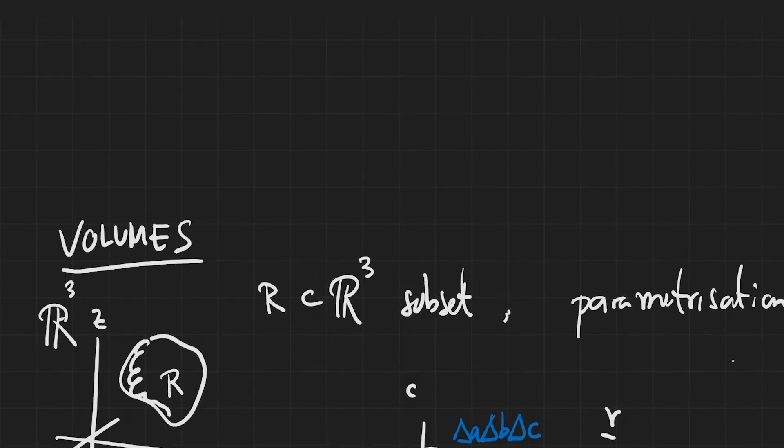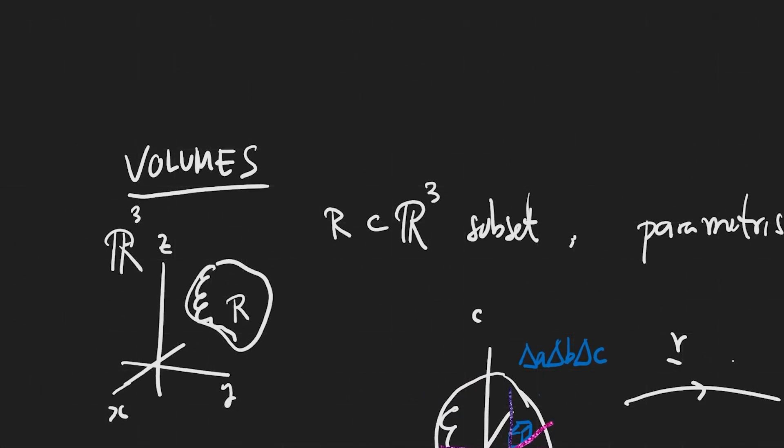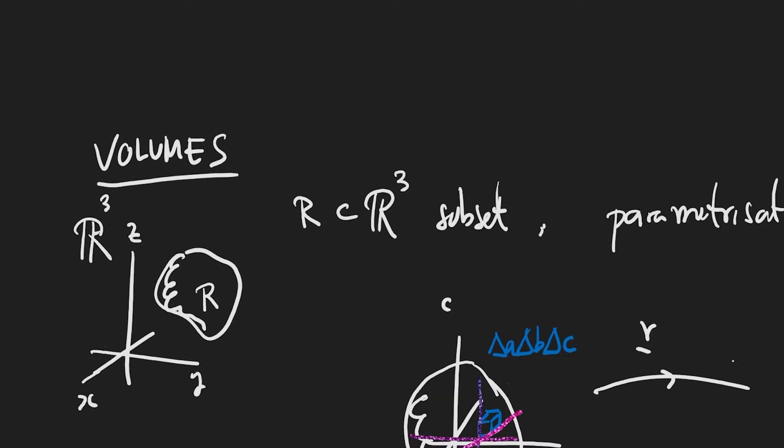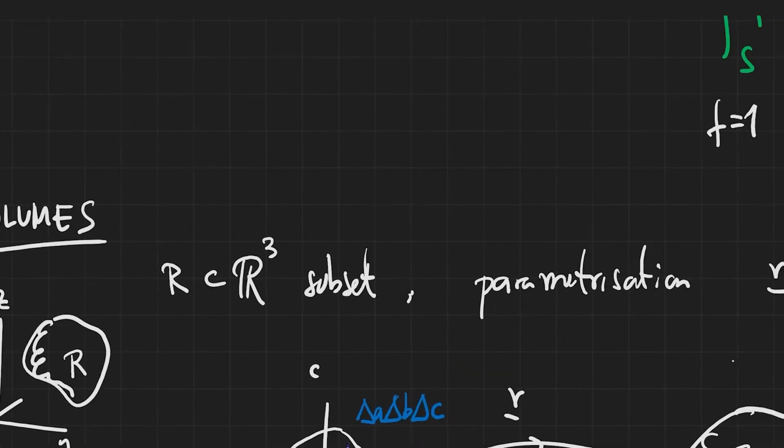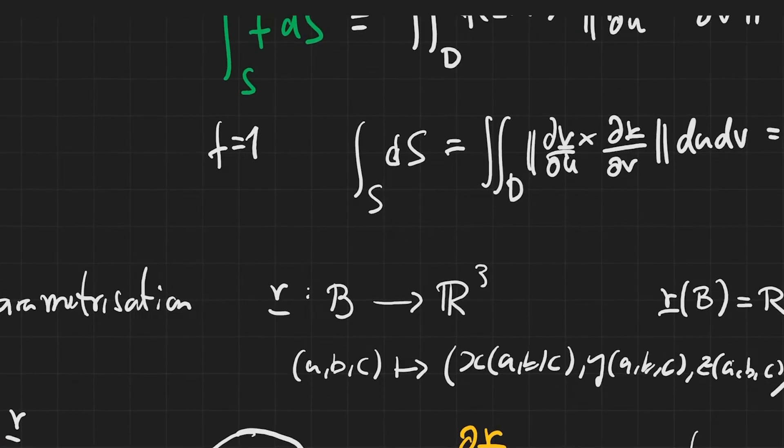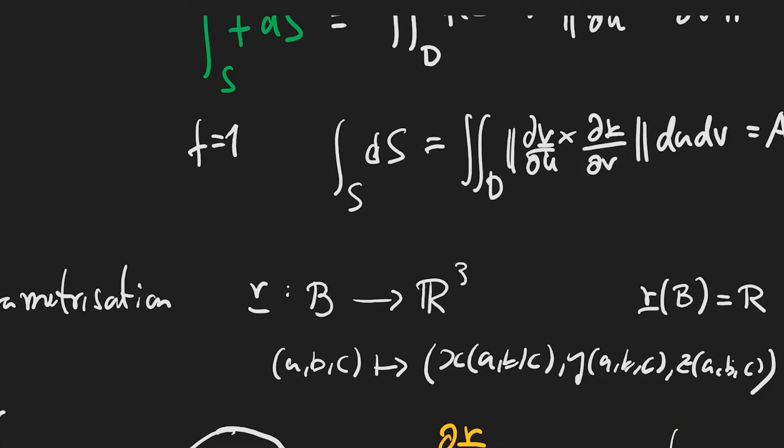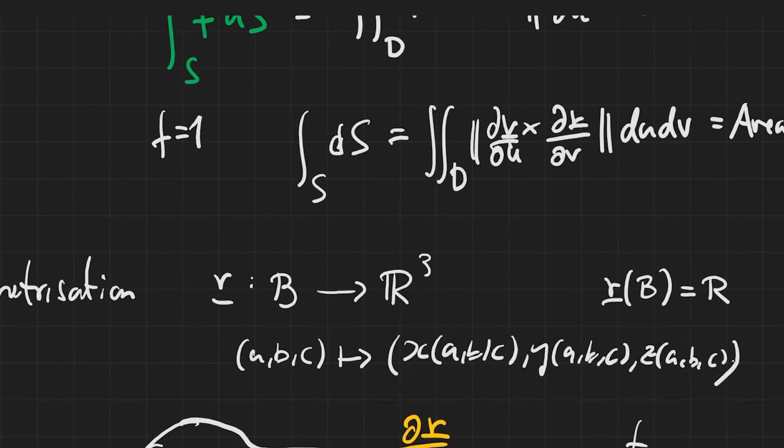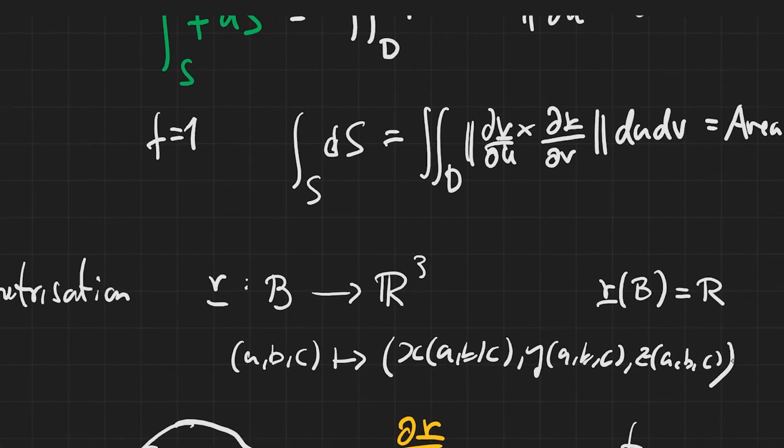And then, finally, for a volume, we have the same story. We have some region of R³ as a subset, which can be described by a parameterization, just like a curve or a surface, but now with three parameters, a, b, c, in such a way that the image of some region B of the a, b, c space gets sent to our region R.